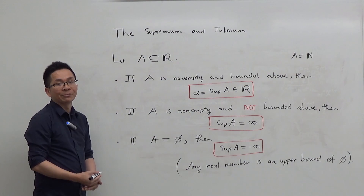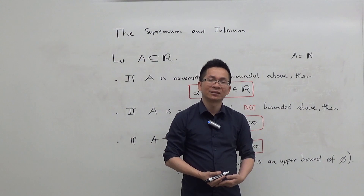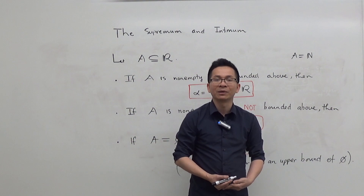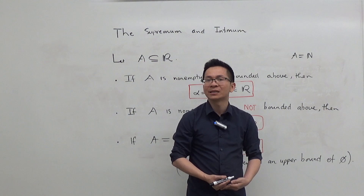In the final case where A is the empty set, any real number is an upper bound of the empty set. So you can pick, say, minus 100 or minus 1000 — both are upper bounds of the empty set. So what is the least upper bound of the empty set? By convention, it is minus infinity.